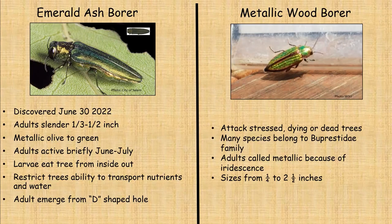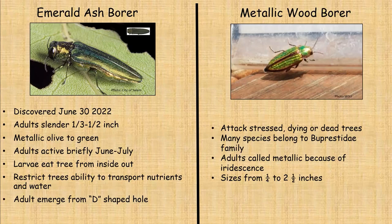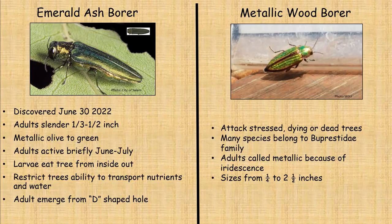When the larvae feed inside the tree, it restricts the tree's ability to transport nutrients and water. After they pupate inside the tree and the adult emerges back out, you will see a D-shaped exit hole in your ash tree. If you have ash trees and you see this hole, you will know that you probably have the emerald ash borer.